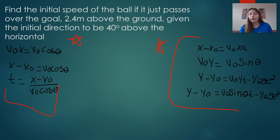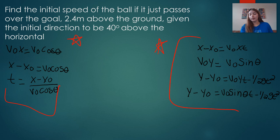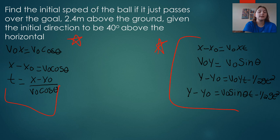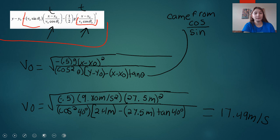v naught y is equal to v naught sine of theta. And that simplifies to y minus y naught is equal to v naught sine of theta times t minus one half g t squared. We're going to be solving for t, and t is equal to x minus x naught all over v naught cosine theta.